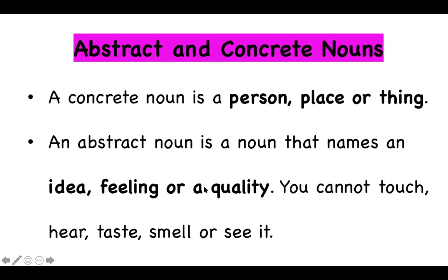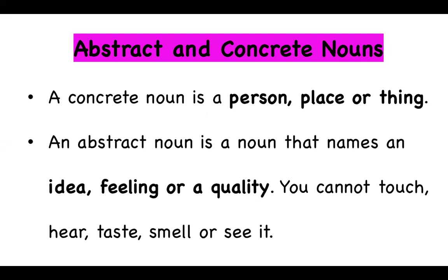Let's move on to our lesson today — grammar. Today we're learning about two different kinds of nouns: abstract and concrete nouns. A concrete noun is a person, place, or thing. An abstract noun is a noun that names an idea, a feeling, or a quality. You cannot touch, hear, taste, smell, or see it. Concrete nouns are called concrete because you can feel them, touch them, taste them, smell them, and see them — for example, this bottle is a concrete noun.